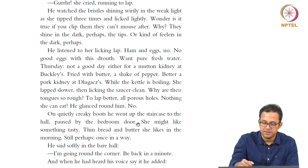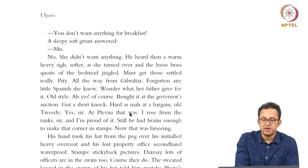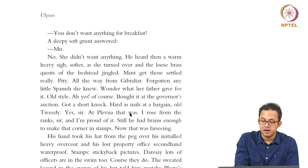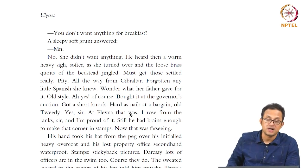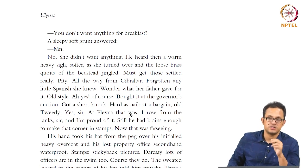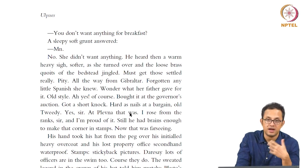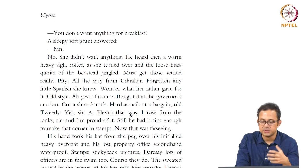When he had heard his voice say it, he added, 'You don't want anything for breakfast?' A sleepy soft grunt answered — no, she did not want anything. He heard then a warm heavy sigh as she turned over, the loose brass quoits of the bedstead jingling. 'Must get those settled, really. Pity — all the way from Gibraltar. Forgotten any little Spanish you knew.' We get an interesting series of information about Molly Bloom — she grew up in Gibraltar, which connects to the original Homeric narrative where Gibraltar features as a voyage marker. The fact that she comes from Gibraltar makes her slightly exotic in Dublin, but at the same time she is very much a Dubliner.